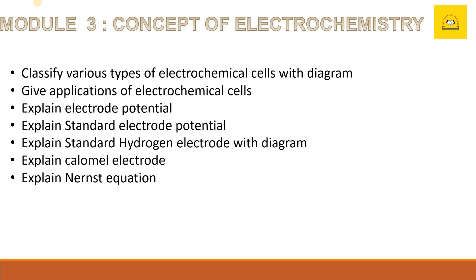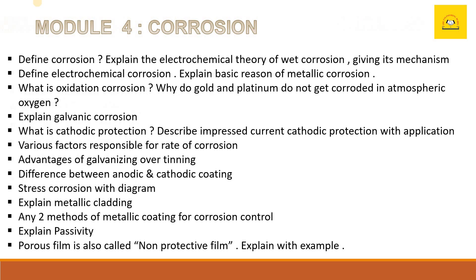The next chapter is corrosion, which has good weightage. Various important questions include: define corrosion, different types of corrosion like galvanic corrosion, what is oxidation corrosion, why do gold and platinum not corrode in atmospheric oxygen, and questions like anodic and cathodic coating.